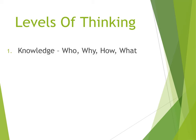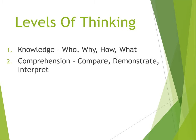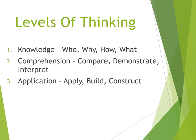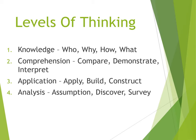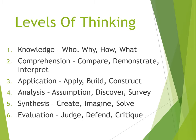The six levels are: 1) Knowledge — who, why, how, what — basic information. 2) Comprehension — understanding by comparing, demonstrating, and interpreting. 3) Application — using knowledge and comprehension to apply, build, construct. 4) Analysis — making assumptions, discovering, surveying. 5) Synthesis — creating, imagining, solving. 6) Evaluation — judging, defending, or critiquing. Let's understand these with an example.